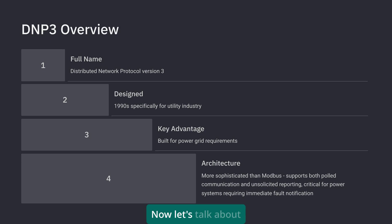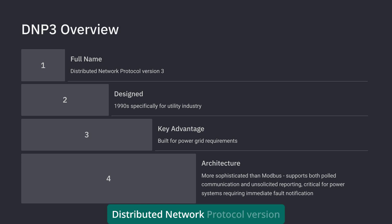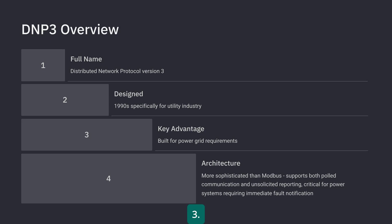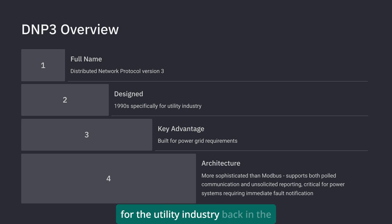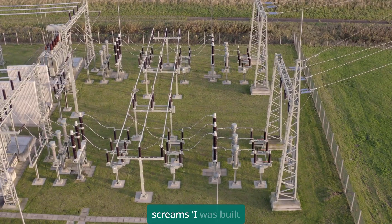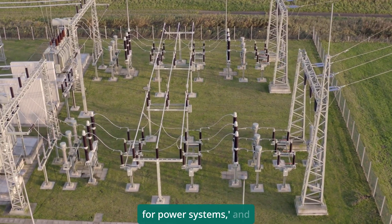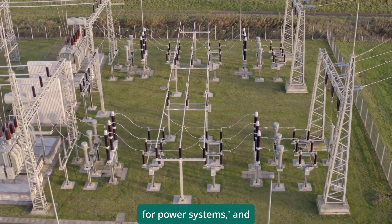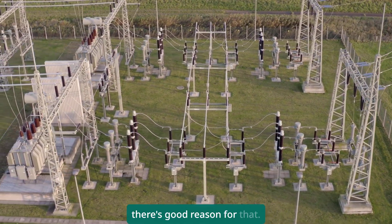Now let's talk about DNP3 — Distributed Network Protocol Version 3. This one was specifically designed for the utility industry back in the 1990s, and you can tell. Everything about DNP3 screams, I was built for power systems, and there's good reason for that.